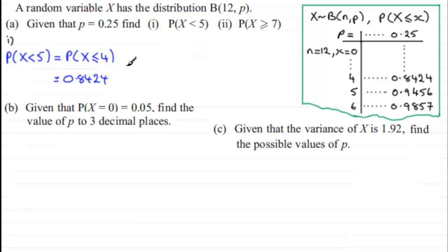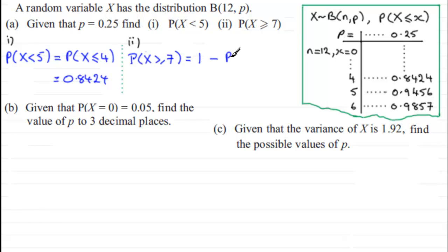In part two, we've got to work out the probability that X is greater than or equal to 7. We can again use the cumulative binomial distribution tables, because this equals one minus the probability of X less than or equal to 6. Using the tables, the probability X is less than or equal to 6 is 0.9857, so one minus 0.9857 gives us 0.0143.